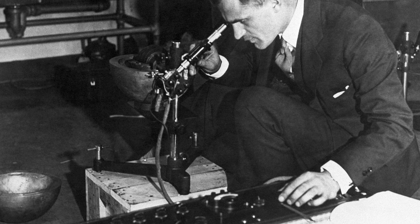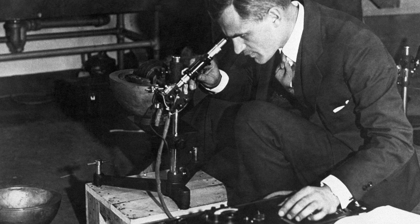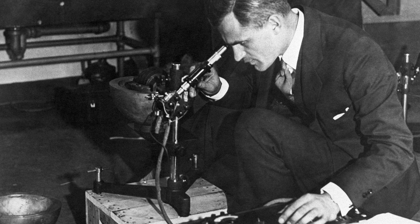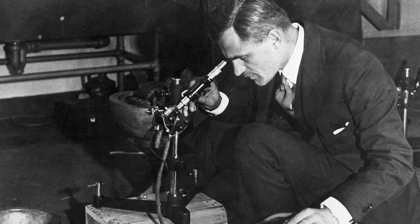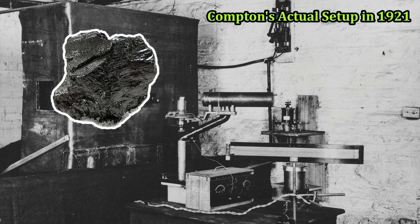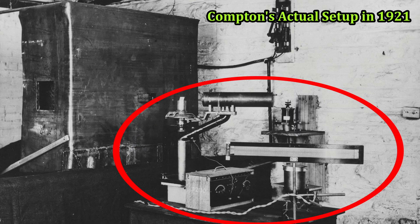In 1921, in a lab in the basement of a building at Washington University in St. Louis, Compton made the choice to observe the spectrum of scattered x-rays rather than the intensity. His setup began with a lead box that housed an x-ray source from the element molybdenum. The box also contained a chunk of graphite, and the x-ray beam would reflect off of this graphite at a 90-degree angle. After this deflection, the x-ray beam would exit the lead box through a small slit and then go through a Bragg spectrometer.